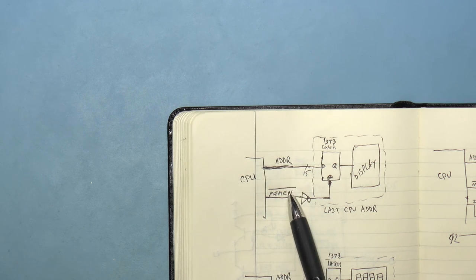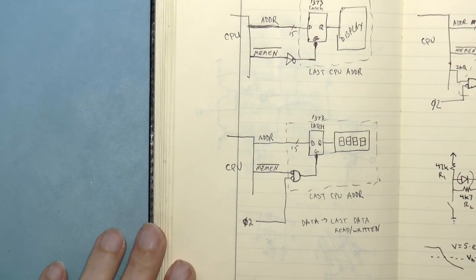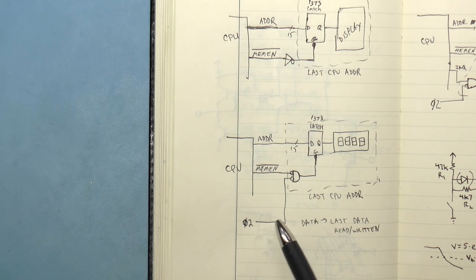This means that the memory enable line unasserting may or may not be synchronized with the address and data lines. However, phase 2 is a good synchronization point, so we need to gate all our signals with phase 2 low.